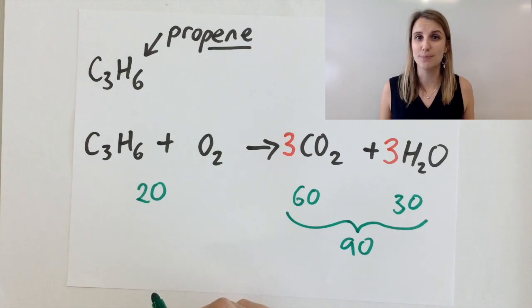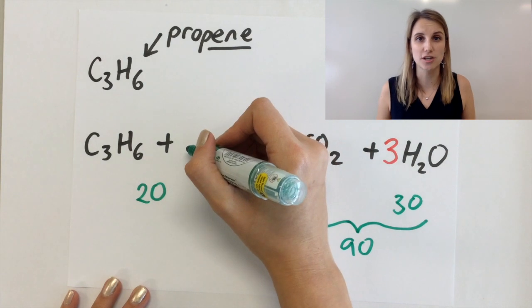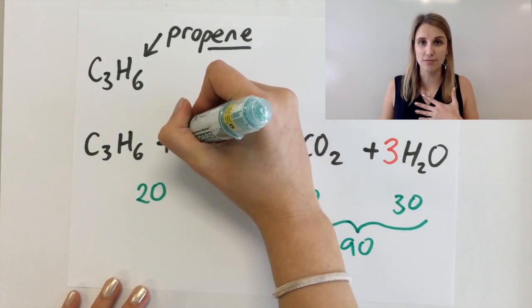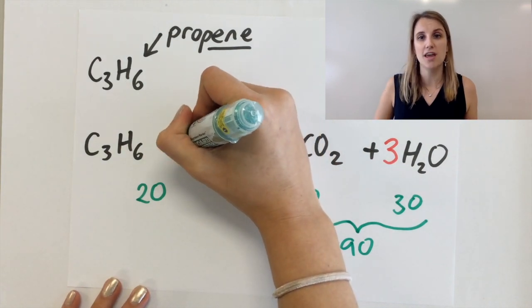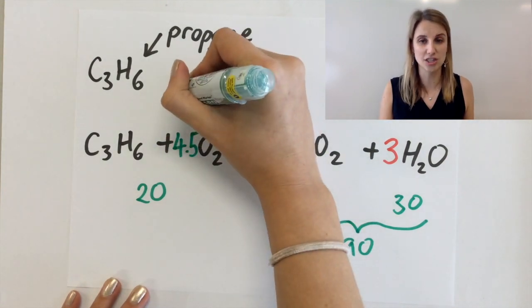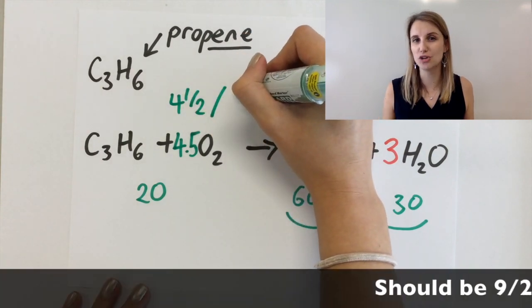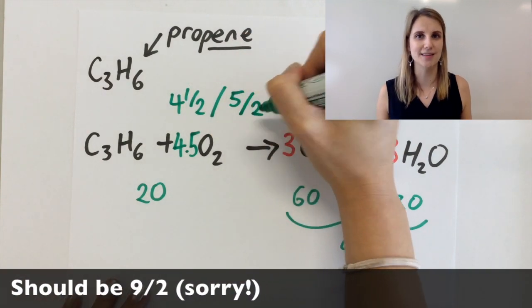Now that's not easy to balance overall and what we often do in combustion equations is we allow ourselves to put a half number in front of the oxygen. So in this case I know I need nine oxygens so that must mean that I need four and a half O2s on the left hand side to balance everything out.